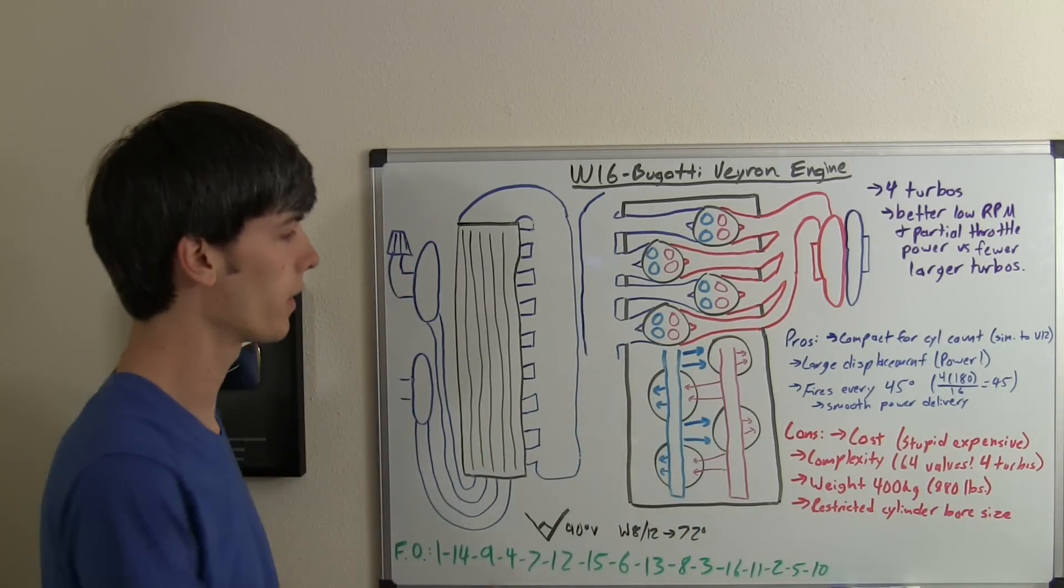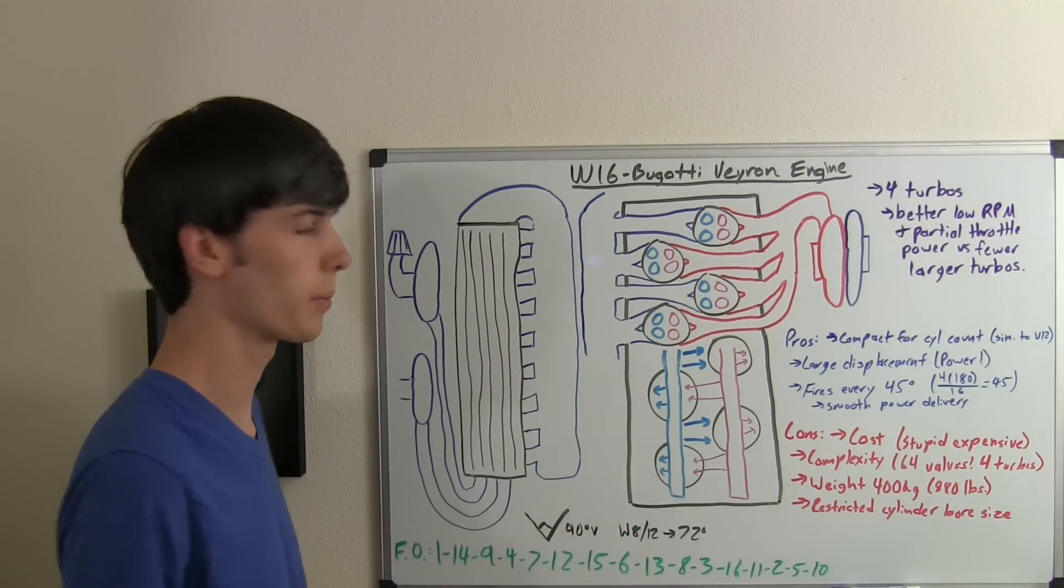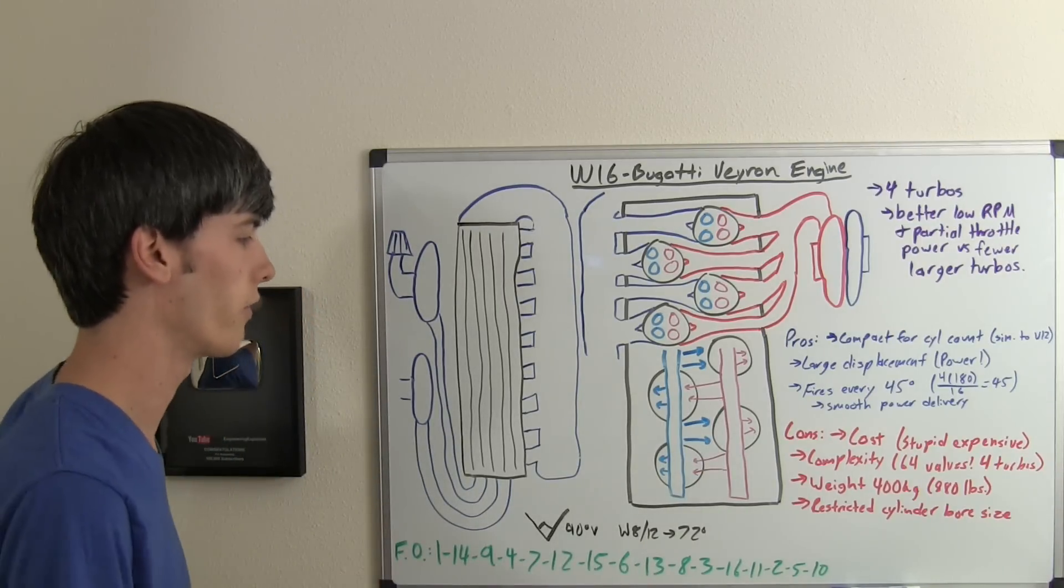Now for the Bugatti Veyron, the W16 is at a 90 degree V, which is different from the W8 and the W12, which Volkswagen makes, and those are at 72 degrees.